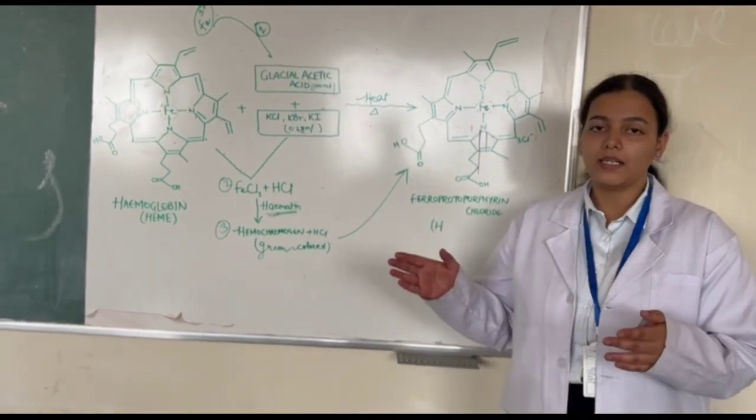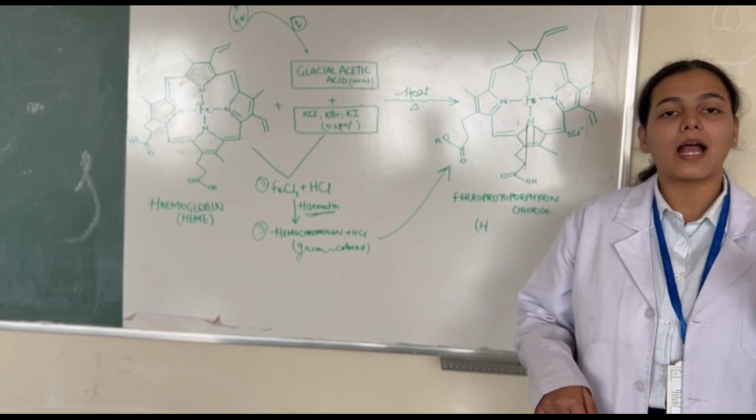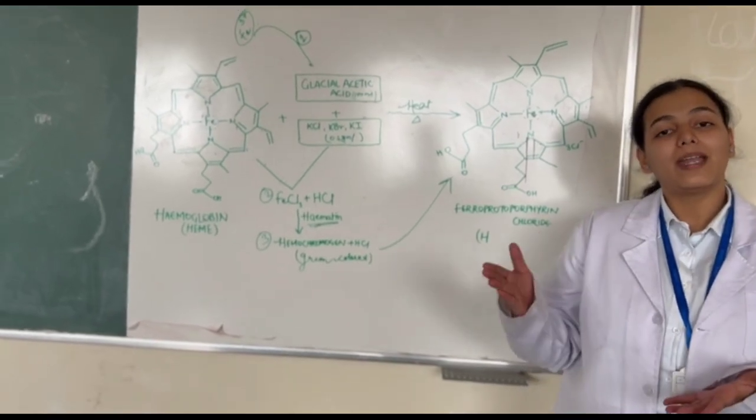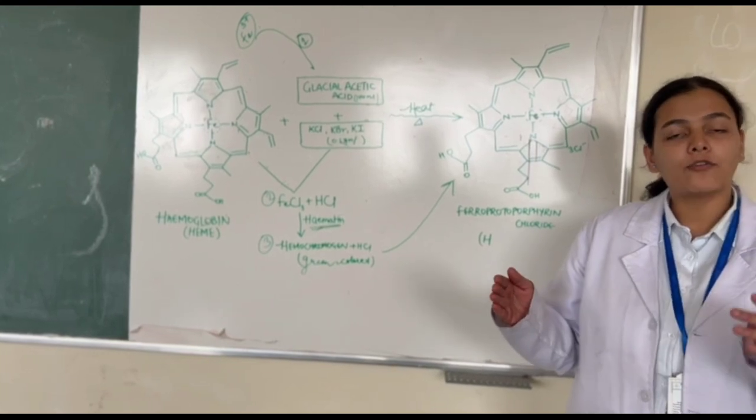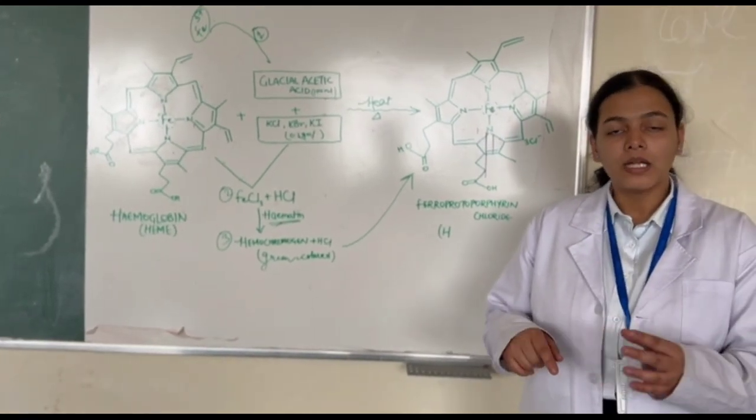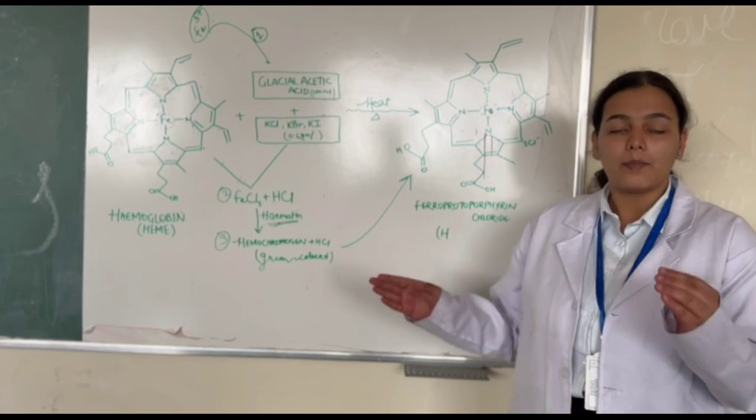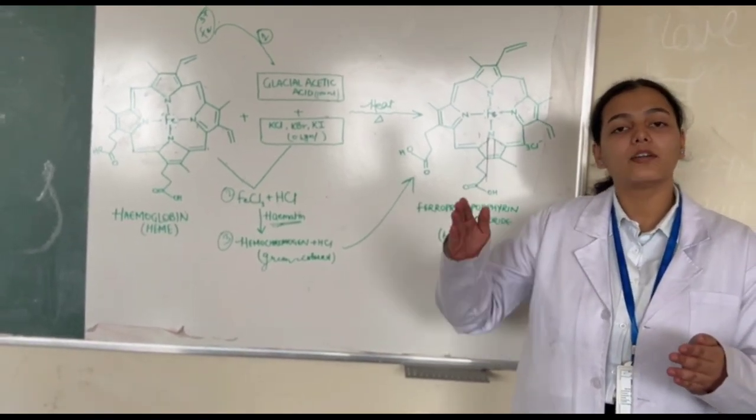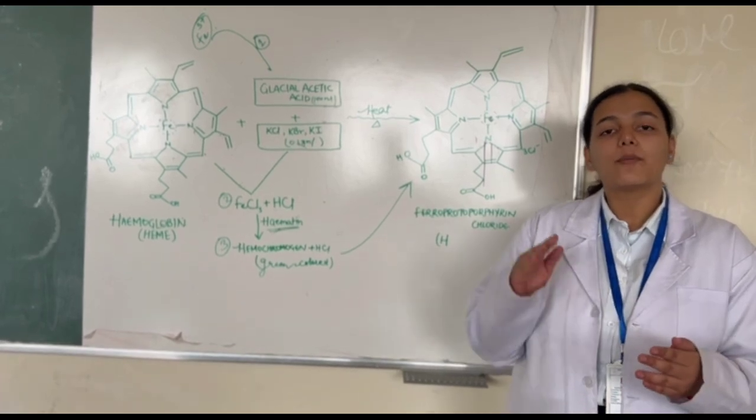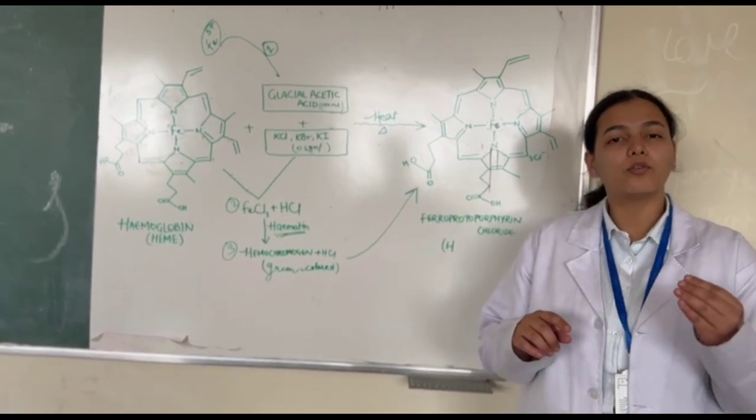First, your hemoglobin has a breakdown component which is called heme. The ferric chloride reacts with heme and forms a green-colored compound called hemochromogen. When hemochromogen is formed, it reacts with your hydrochloric acid and you can see the result as brown rhomboid crystals.